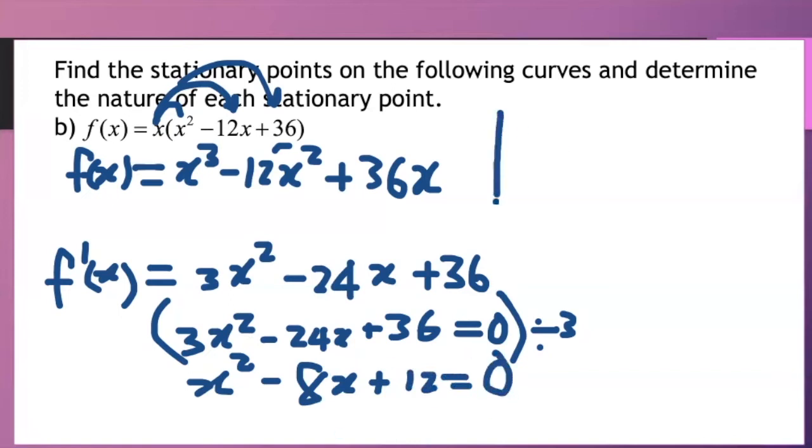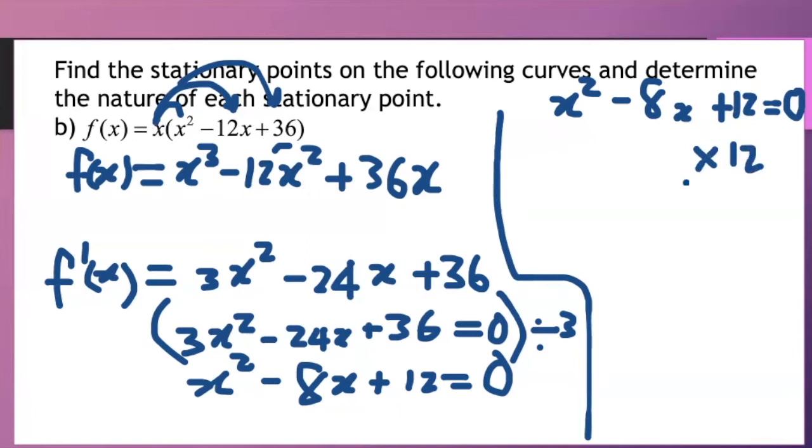Now factorizing this I need two numbers that multiply to give me 12 but add to give me the center which is minus 8. So those two numbers I have to think about what can multiply to give me positive 12 but add to give me negative 8. So I like to put it like this: multiply to give me 12, add to give me minus 8, and those two numbers are negative 6 and negative 2. Those are the two factors.